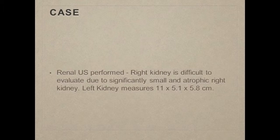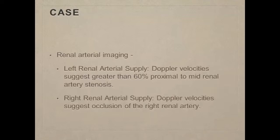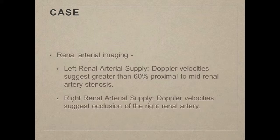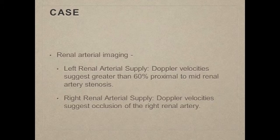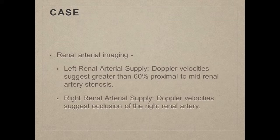We continued to diurese her, and she actually diuresed quite a bit while urinating throughout the hospitalization. It was decided to get a renal arteriogram. The left renal artery measured velocity showed an approximate stenosis of greater than 60% on the left side. The right side showed complete occlusion — there was no blood flow at all to the right kidney. Two years prior, we had done a renal arteriogram and she did have blood flow to the right kidney. So she had progressive atherosclerotic disease to the right kidney and now obviously to the left kidney as well.